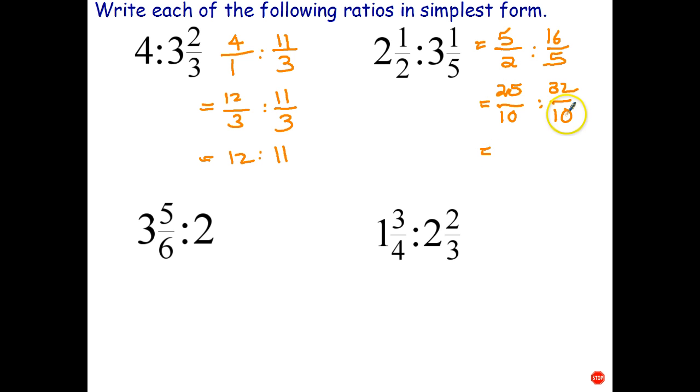Now that we have a common denominator, we can rewrite the ratio just using the numerators. So we have 25 is to 32. And once again, they cannot be simplified. So that's already simplified, that's the final answer.